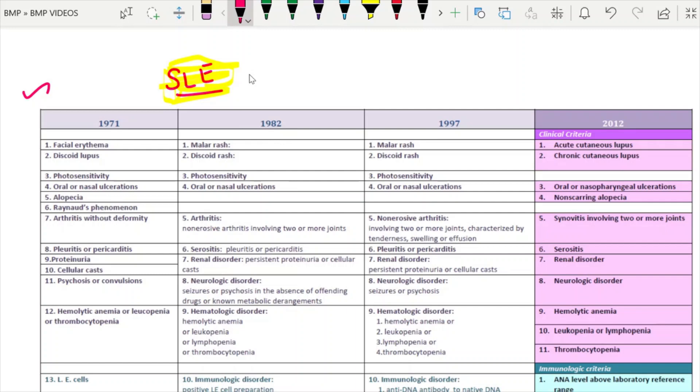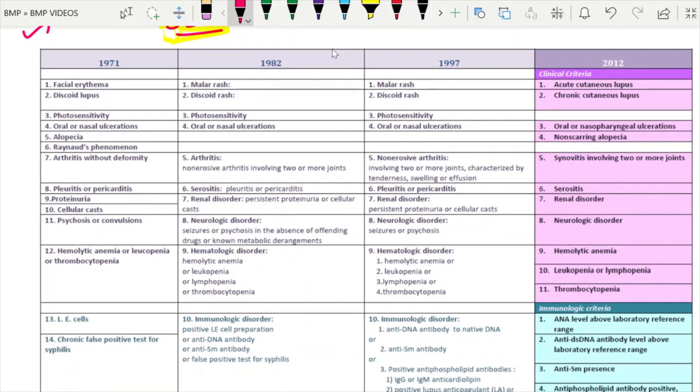Regarding the systemic lupus erythematosus diagnostic and classification criteria, there are various diagnostic criteria which have evolved over the years. In summary, we will see the salient points with each classification. If we take the evolution of this SLE diagnostic and classification system, the ACR criteria have been updated in 1971, 1982, and the latest that we are following is the ACR criteria of 1997.